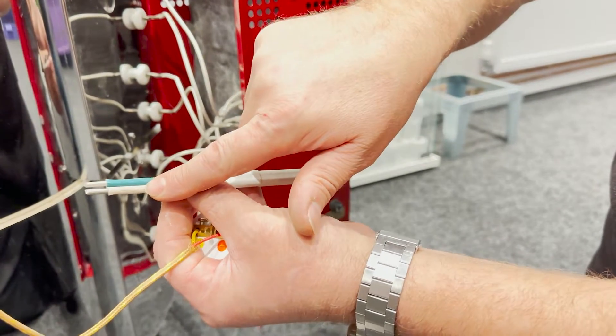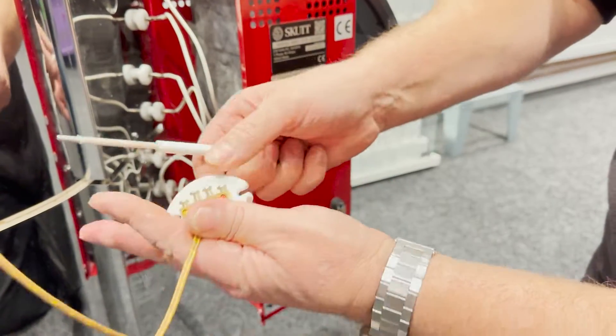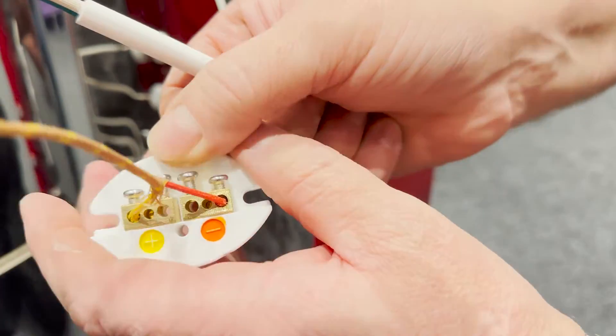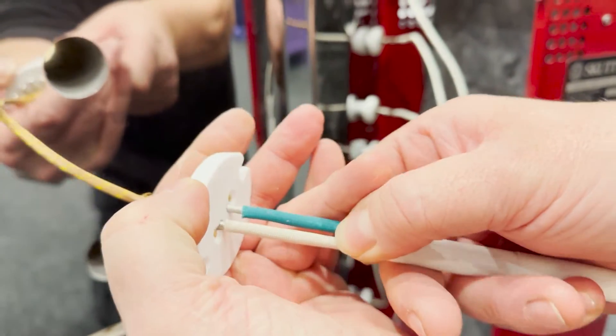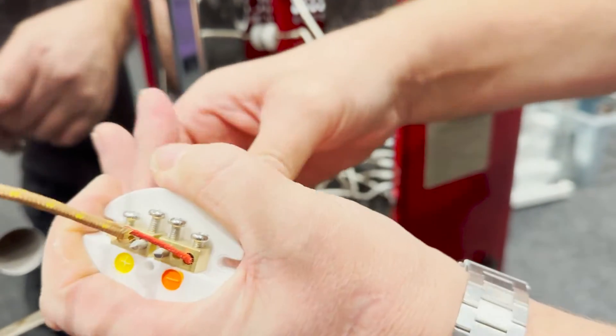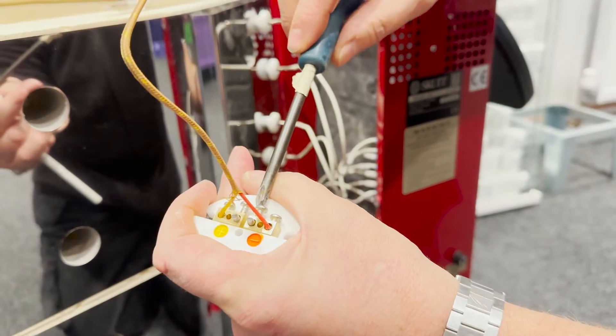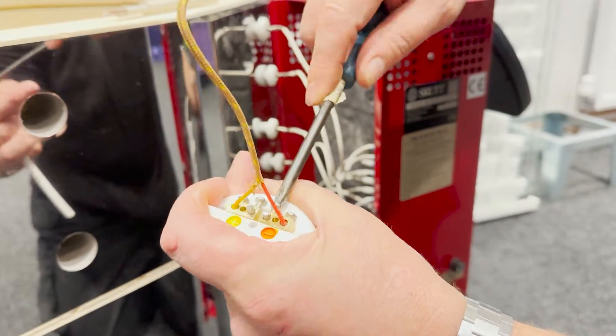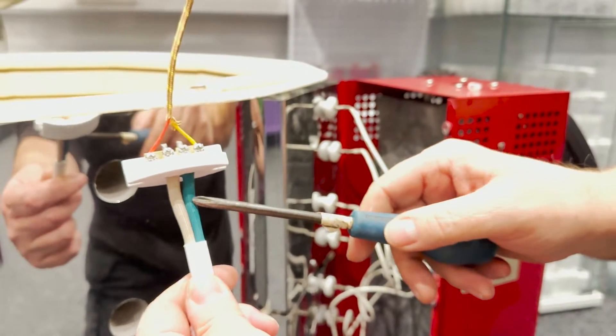So the green - can you see the positive and negative there? The green fits in the back. You'll see it come through. And then just tighten those screws up until they're tight, but not too tight.